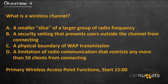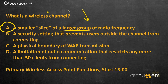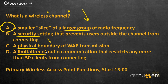Question number four: what is a wireless channel? The answer is A — a smaller slice of a larger group of radio frequency. We use the word channel to humanize it, because it gets complex when you start slicing up radio frequencies into smaller spectrums. It has nothing to do with security, nothing physical about it, and doesn't define a boundary. It doesn't limit how many devices can connect; however, a channel can be saturated — only one device can communicate on a channel at a time, or else they interfere with each other.